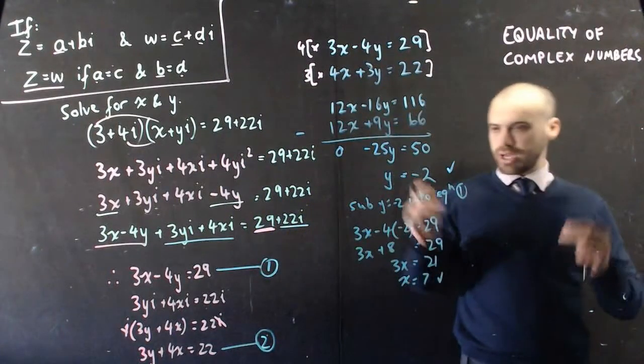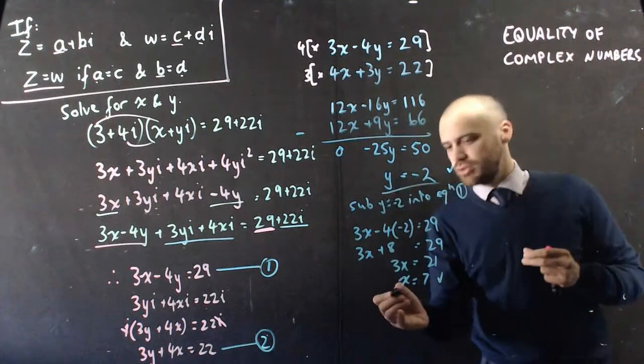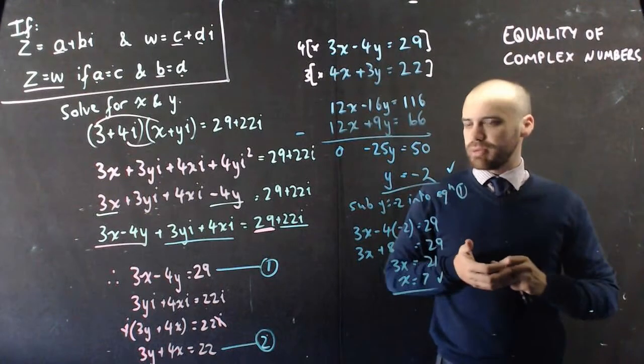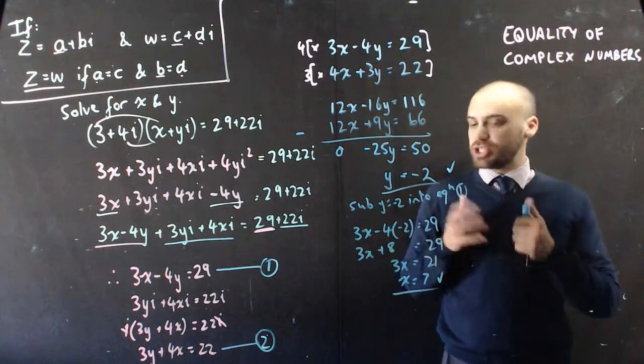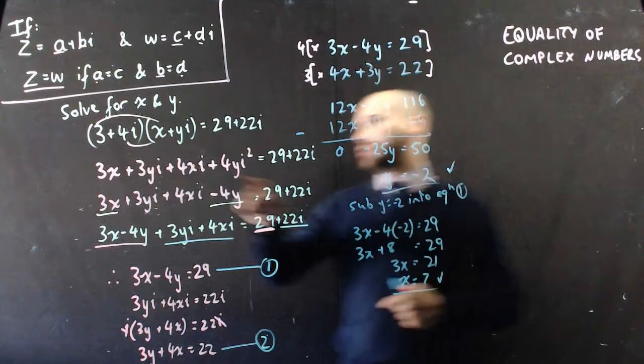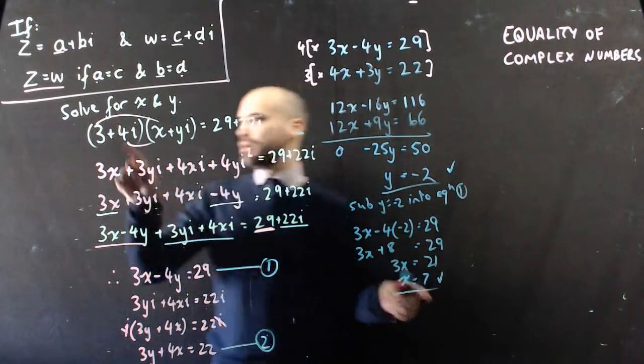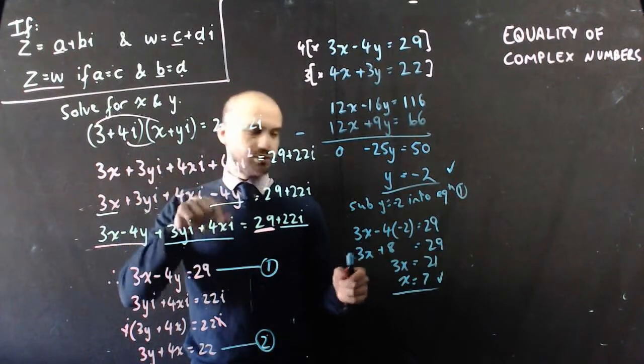So I have two answers, I have y = -2, I have x = 7. I'm feeling pretty confident about that. I can check it by putting -2 back here, and putting 7 here,